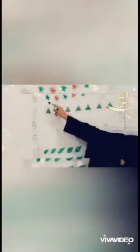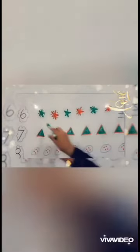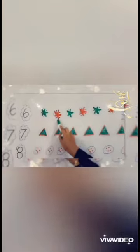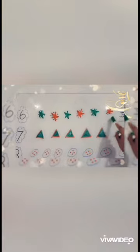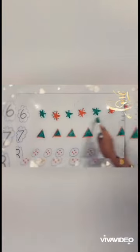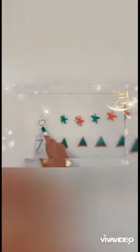How many stars are here? Count with me — one, two, three, four, five, six. How many stars are here? Six. This is number six.